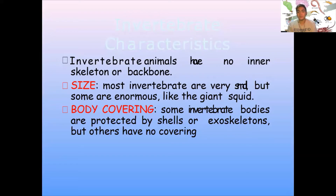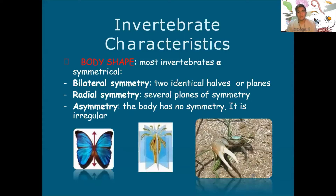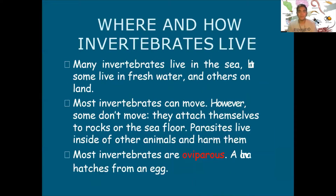In terms of their body covering, some invertebrate bodies are protected by shells or exoskeletons, but others do not have covering. In terms of their body shape, most invertebrates are symmetrical, meaning it can be bilateral — two identical halves or planes — radial symmetry with several planes of symmetry, or it can be asymmetry where the body has no symmetry, also called irregular shape.